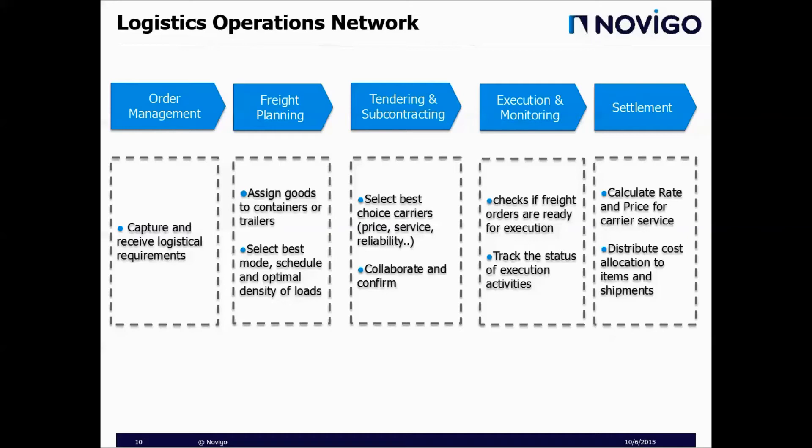Then the company performs tendering and subcontracting: they select the best carriers and collaborate with subcontractors. The next step is execution and monitoring, which is closely dependent on another SAP module called SAP EM, or event management. The company checks if freight orders are ready for execution and tracks the status. The last step is settlement, where the company calculates the rate and price for carrier service and distributes cost allocation to items and shipments.